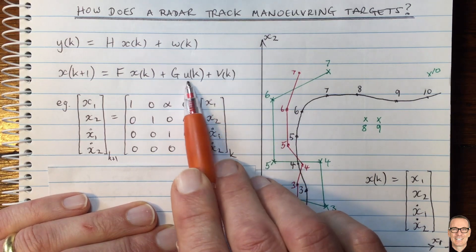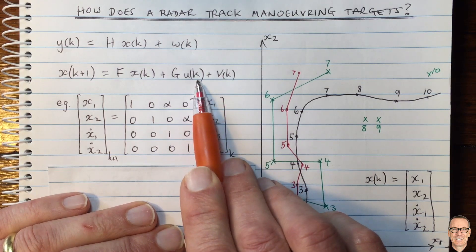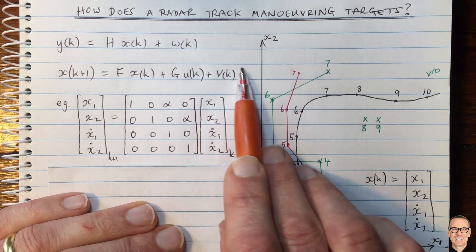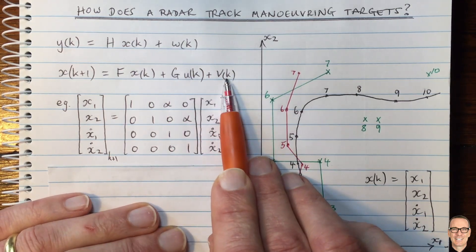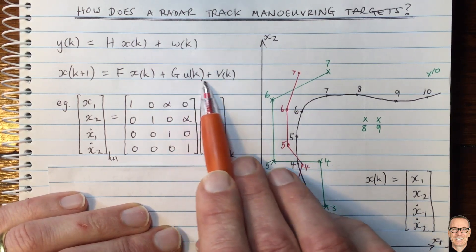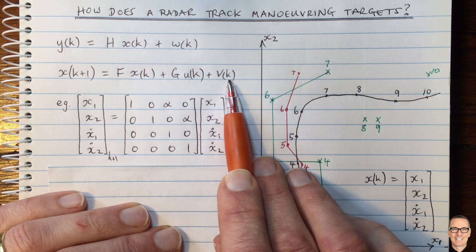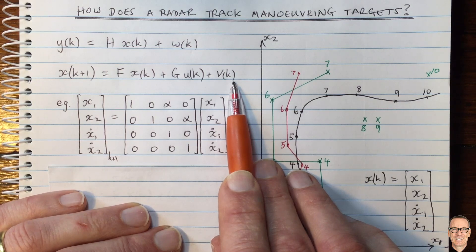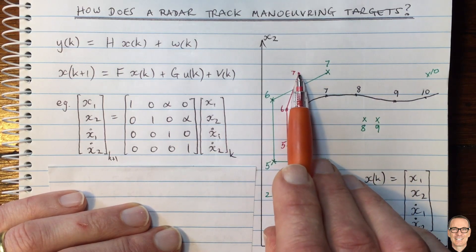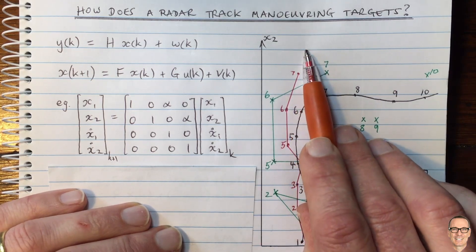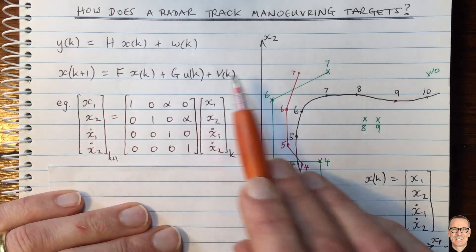So one thing we can do is to model this as a random process. And in that case, we can group it together with the noise in the system noise. And we can run our filter with a larger system noise. That would be the first approach. And that would mean that you would take less notice of the prediction coming from the system equation, and you would take more notice of the update which comes from the measurement.